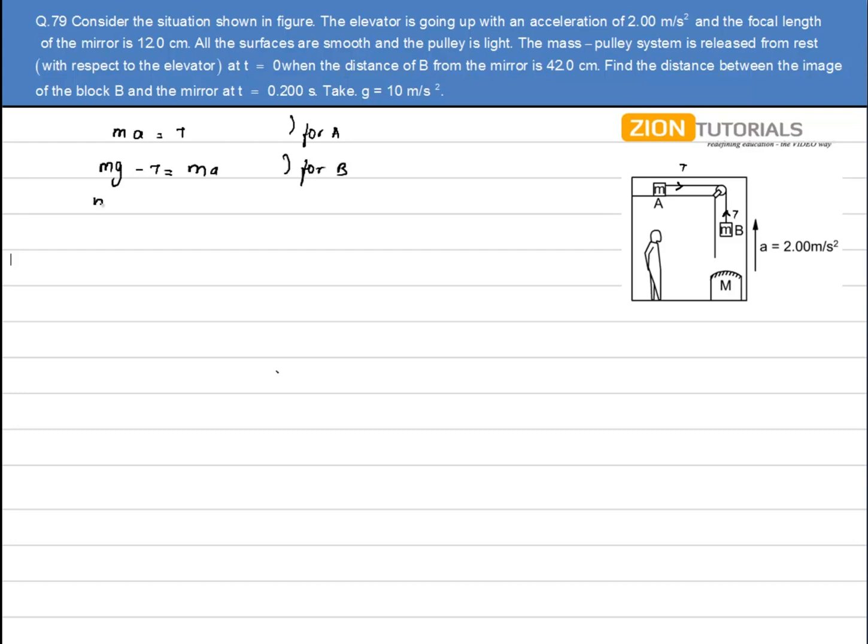Alright so I can write mg minus ma is equal to m of a again. Now if both masses are the same, so I can write m times g is equal to 2ma. Mass is cancelled. So the acceleration comes out to be g by 2.